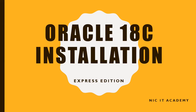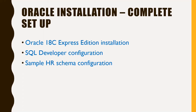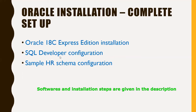Welcome. In this session, we are going to see how to install Oracle 18c Express Edition on our Windows machine. We have to follow three steps: first, install the Express Edition; then configure SQL Developer; and since 18c Express Edition doesn't have an HR schema, we are going to import the HR schema into the database. We will see these three steps one by one.